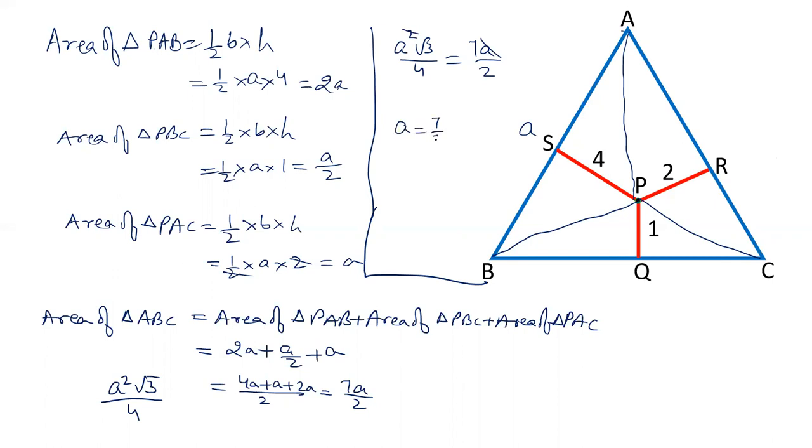So, value of A will be 7 by 2 into 4 by root 3. 2 into 4, A is equal to 14 by root 3. And if you multiply and divide by root 3, that gives us 14 root 3 by 3. So, the side of equilateral triangle will be 14 root 3 by 3.